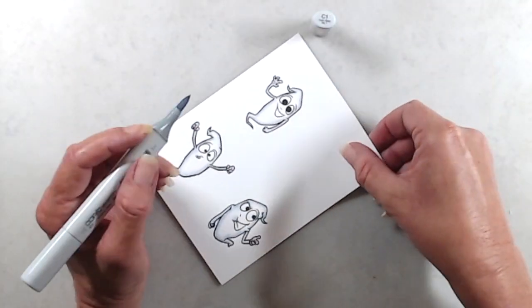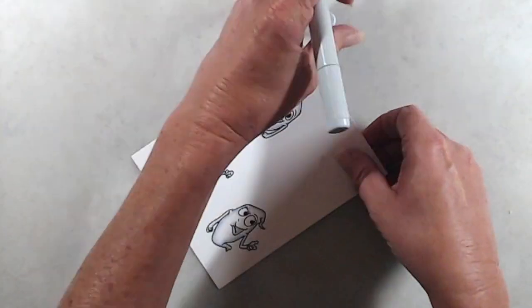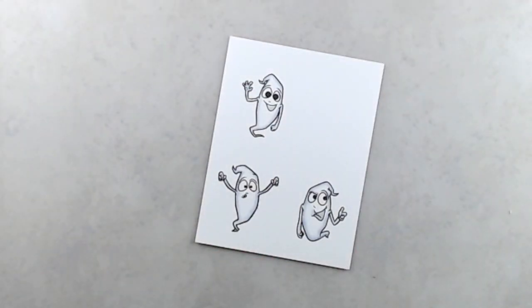And to color in their mouths, I used a C1 marker. After I was done coloring the ghosts, I did run them through my Brother Scan and Cut machine to cut them out.